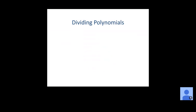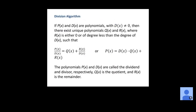Section 3.3 — dividing polynomials. Now we're going to look at the process for dividing two polynomials. There are going to be two methods: one that works for all different types of polynomials, and one that works for specific types but is a much shorter process. If P of X and D of X are two polynomials and D of X can't equal zero, then there exist unique polynomials Q of X and R of X, where R of X is either zero or has a degree less than D of X.